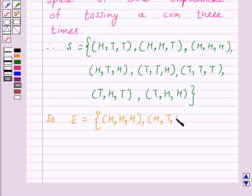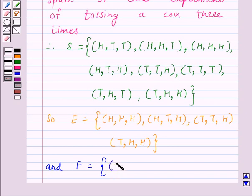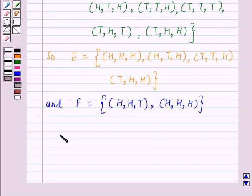TTH, and THH. And F is equal to HHH. So E intersection F is equal to HHH only.